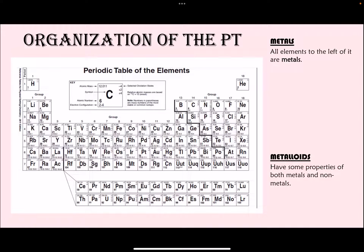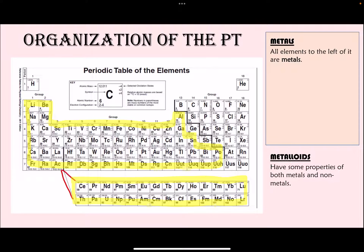Another way to classify elements is in terms of metals, metalloids, and non-metals. All of the elements on the left of the periodic table — highlighted in yellow — are the metals. The two rows at the bottom are also metals; they are metals emerging from the transition metals. Notice we stop at 57 and then continue at 72, so elements 58 to 71 are placed in those bottom rows.